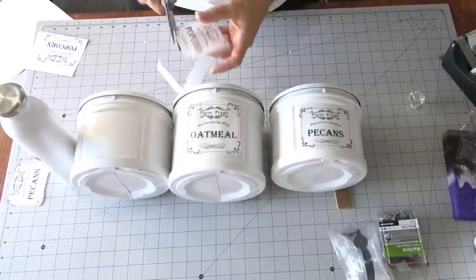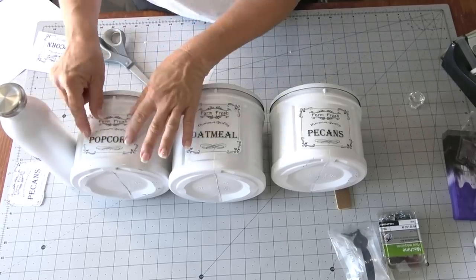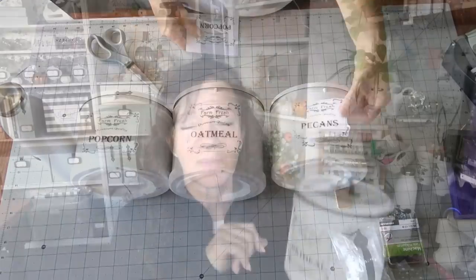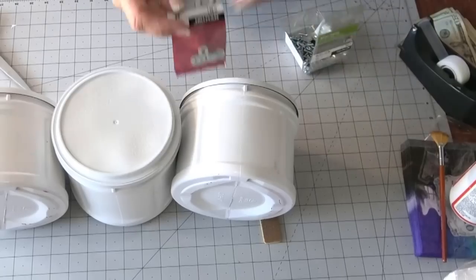The containers I have are different sizes. The middle one is slightly taller than the other two. I'm not going to give you sizes for the labels because your canister might be different, but I just measured the space that I wanted to fill with the label and then just sized it on my computer. Now the only other thing you'll need is some small washers and a little nut and bolt for the handle.